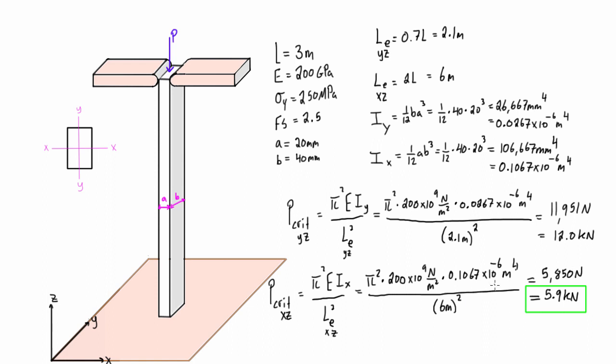We can also check the allowable load based on the factor of safety. Factor of safety equals the ultimate load over the allowable load. If we rearrange for the allowable load, we get the ultimate load, which is 5.9 kN, divided by the factor of safety.